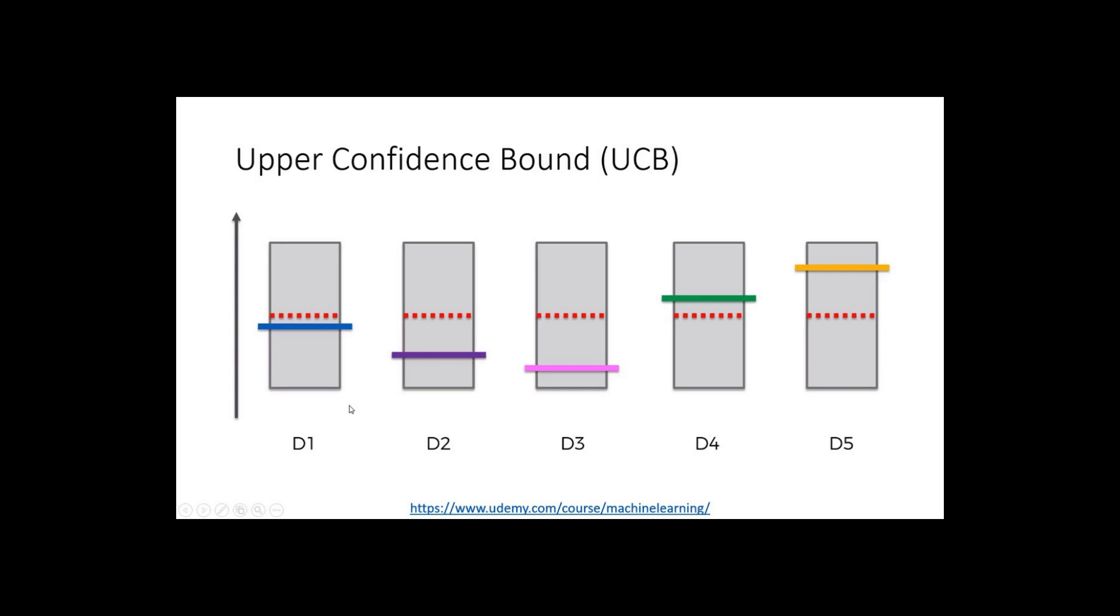Can we have an approach where we can decide which machine to play based on the number of times we have played on that machine and the reward it has generated? Yes, there is. And that approach is called upper confidence bound. So instead of playing randomly on a machine occasionally, as we did with the epsilon-greedy approach, it actually decides on a quantity, and we can play on that machine where the quantity is maximum. And that quantity is called upper confidence bound.